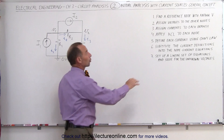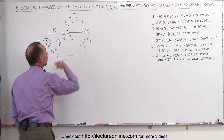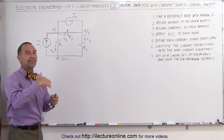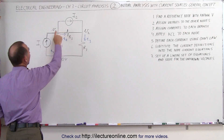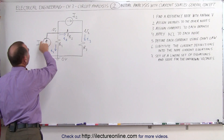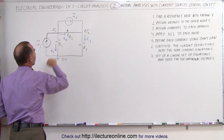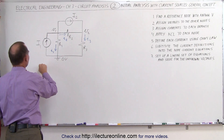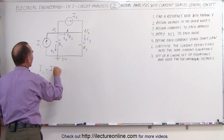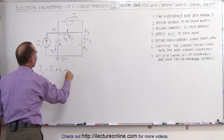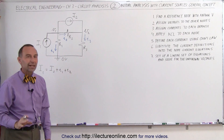Next we apply Kirchhoff's current law to each node, looking at each of the two nodes and setting all currents entering the node equal to all currents leaving the node. For this first node, we have one current entering — capital I1 — and three currents leaving: capital I2, small i2, and small i1. So we write: I1 = I2 + i1 + i2. That's step four.